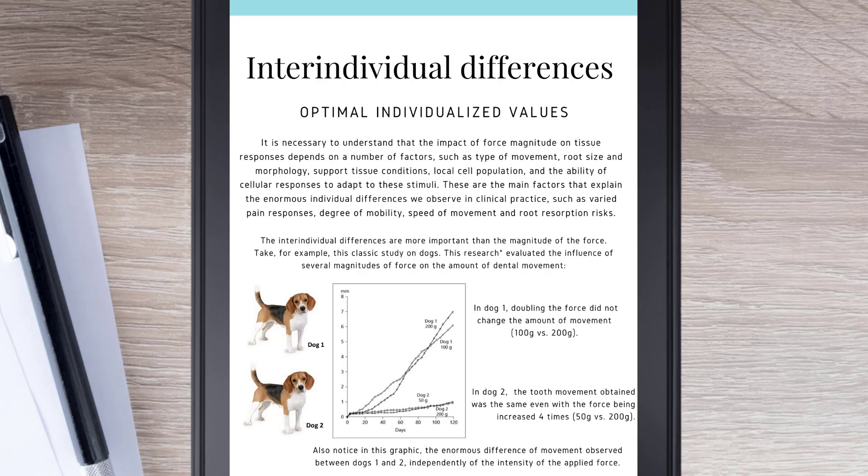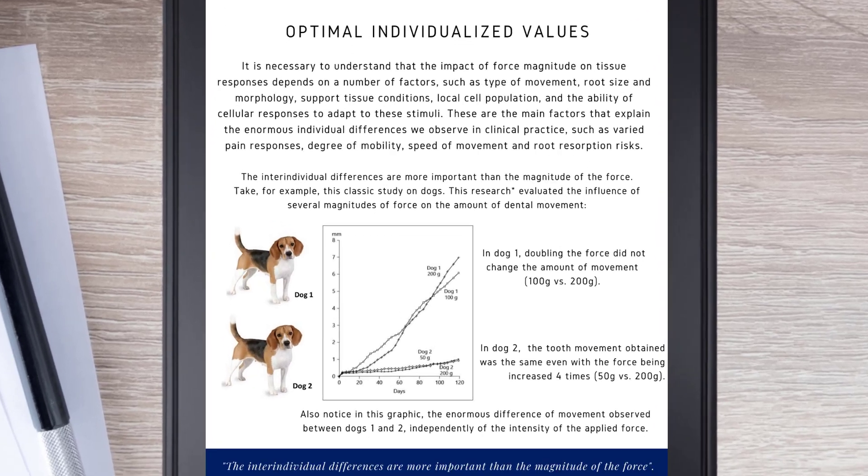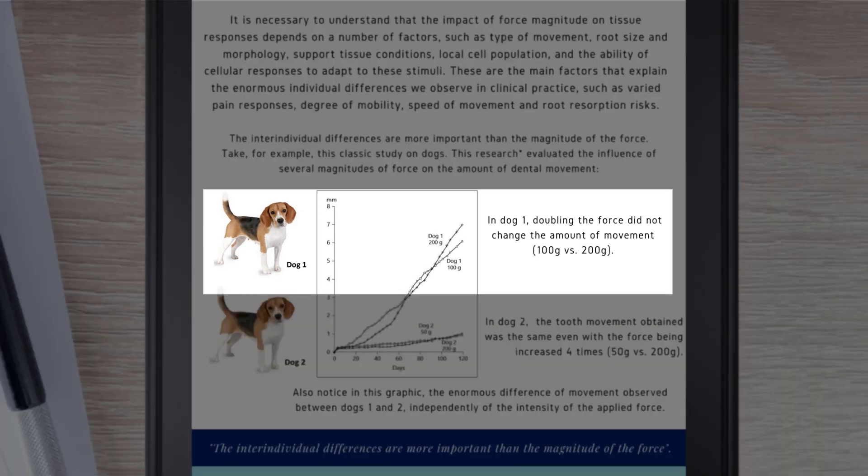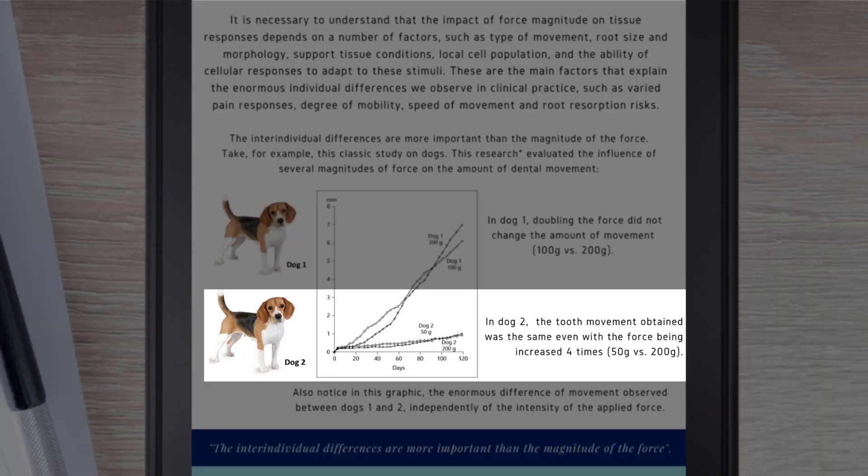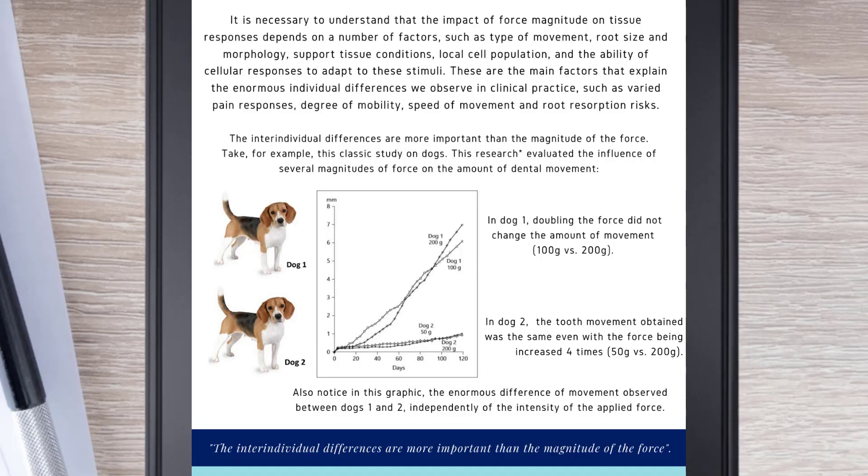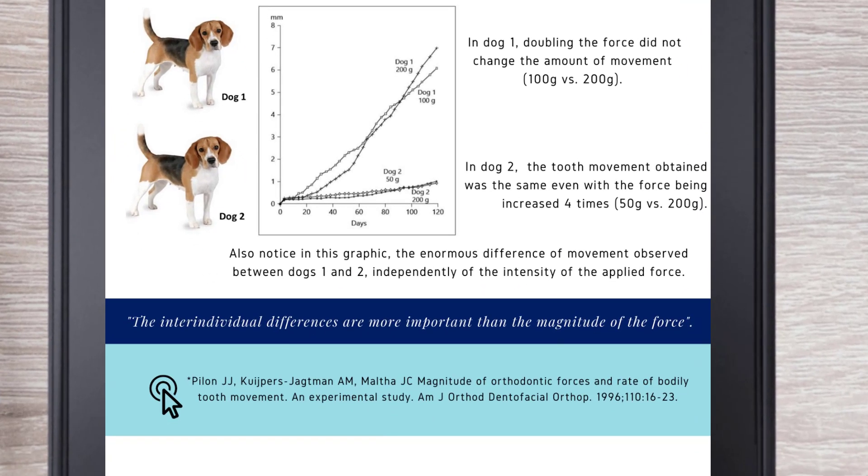The inter-individual differences are more important than the magnitude of the force. Take, for example, this classic study on dogs. This research evaluated the influence of several magnitudes of force on the amount of dental movement. In Dog 1, for example, doubling the force did not change the amount of movement. In Dog 2, the tooth movement obtained was the same even with the force being increased four times. Also notice in this graphic the enormous difference of movement observed between Dog 1 and 2, independently of the intensity of the applied force. The take-home message here is the inter-individual differences are more important than the magnitude of the force.